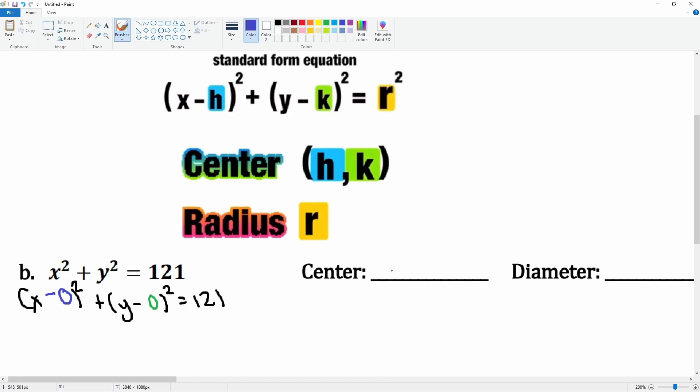So here the center is 0 and the k here is 0. That's that. The radius would be the square root, so the radius is square root of 121, which is 11. However, you want the diameter, and we know that the diameter is twice the radius, so that diameter is equal to 22. There you go.